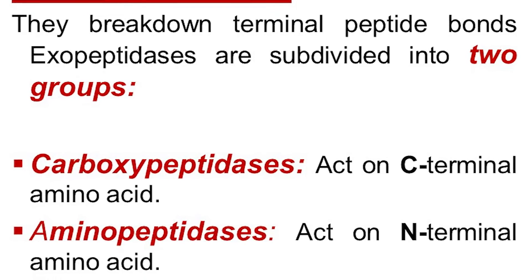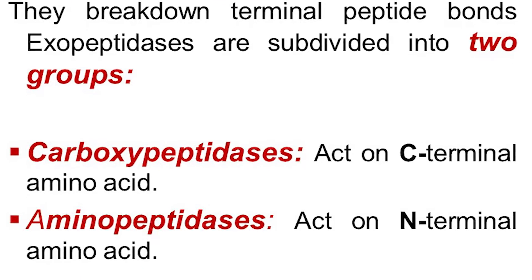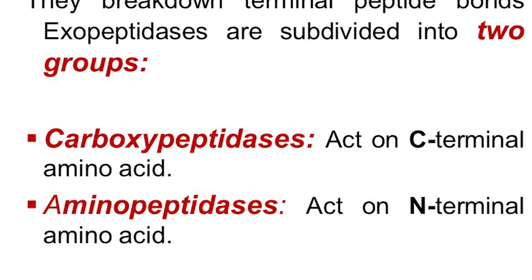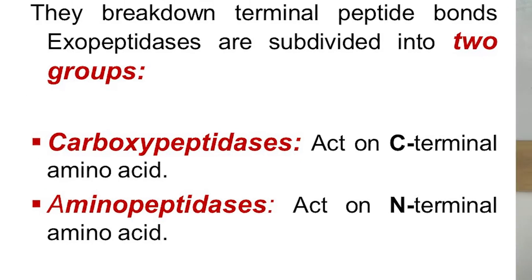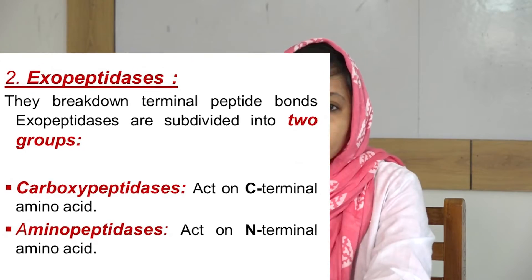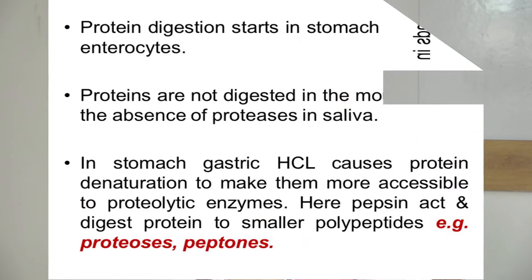Exopeptidases break down the terminal bonds of protein. They are divided into two types: aminopeptidases and carboxypeptidases.